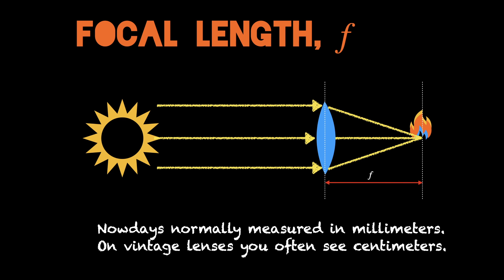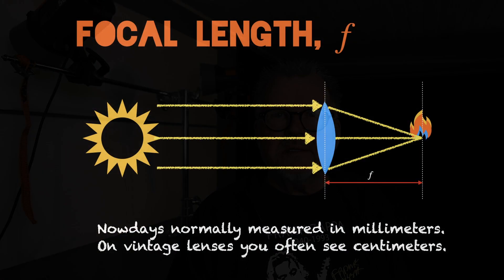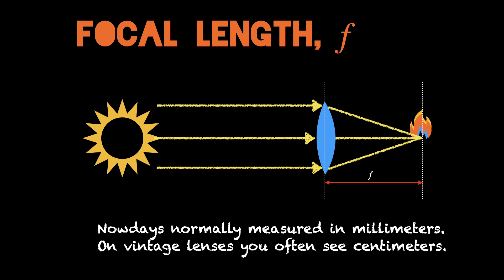You may have played with the focal length of a simple lens — a magnifier or something — collecting the light to one point to get something to begin to burn, or at least get hot and start smoking. Nowadays focal lengths are often measured in millimeters. On some vintage lenses you will probably see centimeters instead. The focal length is often marked with the letter F.